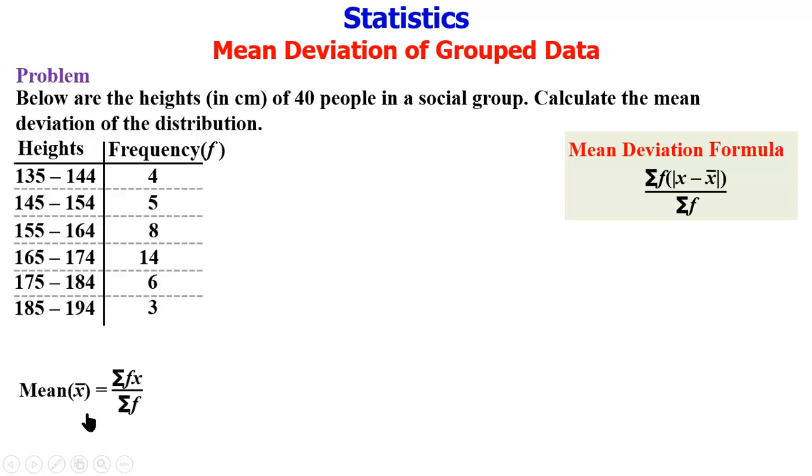So the formula for calculating the mean is given as sigma fx over sigma f. We need a column for x and the fx. So we have the columns.